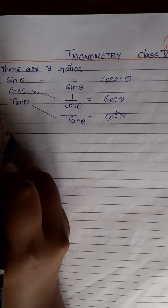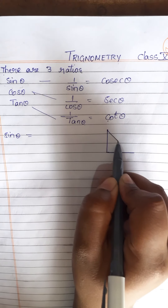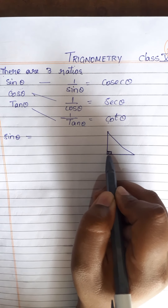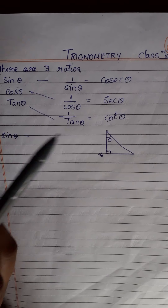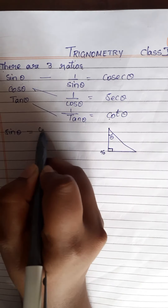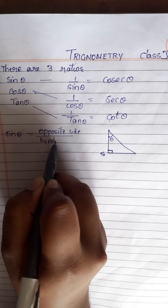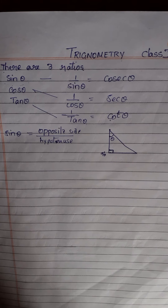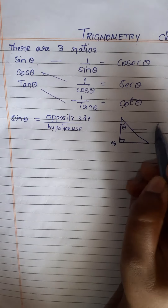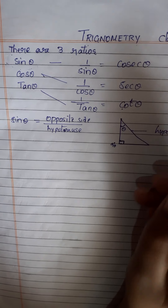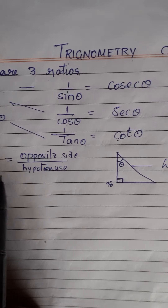What is sine theta? Let's see sine theta. Let us take a right angle triangle. This angle is 90 degrees. Consider angle theta here. Sin theta equals the opposite side by hypotenuse. In a right angle triangle, the longest side is the hypotenuse.